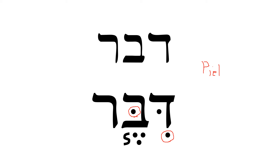This vowel here can sometimes be variable — you'll see a segol every now and then, but normally you see a tsere or patach. But it's your hiriq and your dagesh forte that are going to be your indicators that you're looking at a Piel. Because of the absence of an ending or anything in the beginning, this is clearly simply a Piel perfect 3MS.